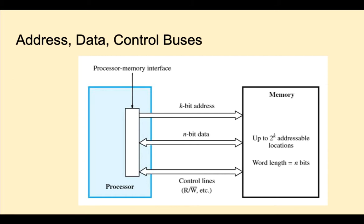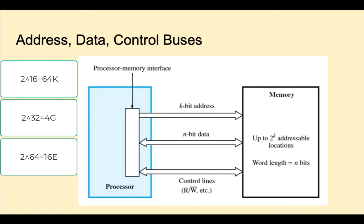The maximum size of physical memory that a CPU can access is determined by the size of its address bus. A 16-bit address bus could access up to 2 to the 16 or 64k memory locations. A 32-bit address bus could access up to 2 to the 32 or 4 gig locations. A 64-bit address bus could access up to 2 to the 64 or 16 exabyte locations. An exabyte is a billion gigabytes.